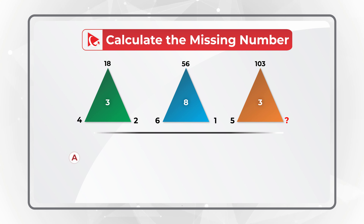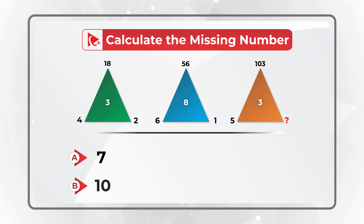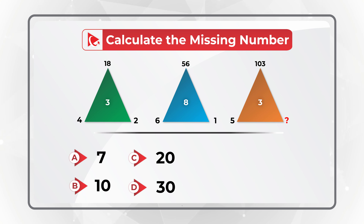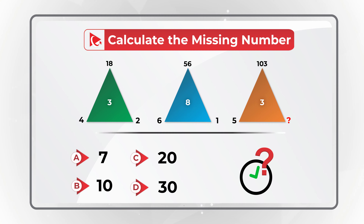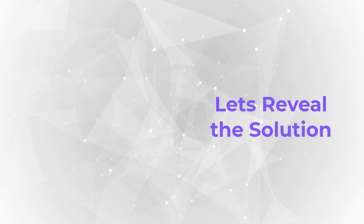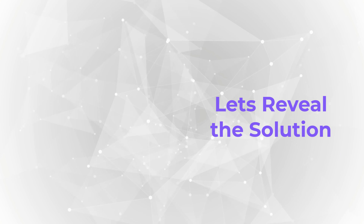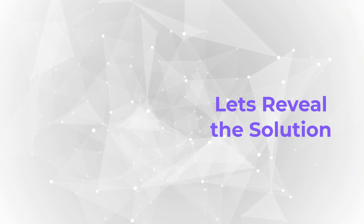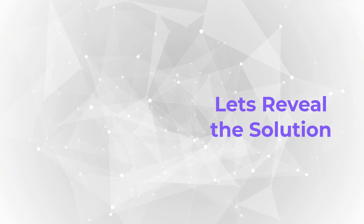You need to calculate the missing number from four choices: A — 7, B — 10, C — 20, and D — 30. The solution may be very obvious, but I would like you to try to get to it on your own before I move forward to reveal the solution.